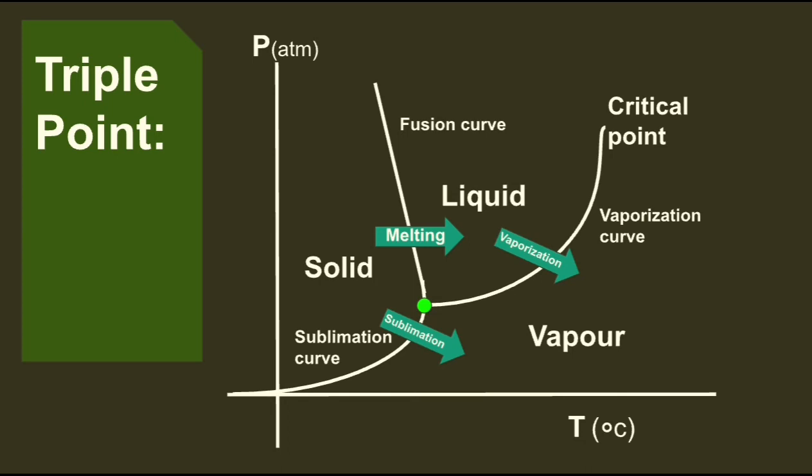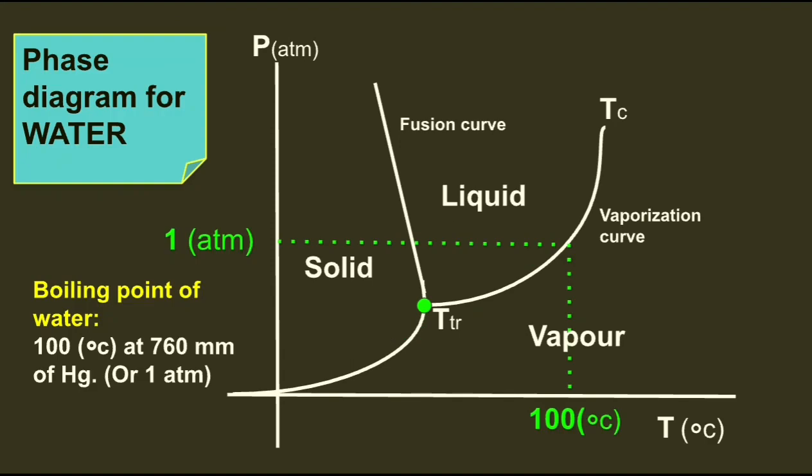Do you think your answer is correct? No, your answer is incomplete. Your answer should be 100 degrees Celsius at pressure 760 mm of mercury or one atmospheric pressure. The boiling point of water or any substance is not constant—it depends on pressure.